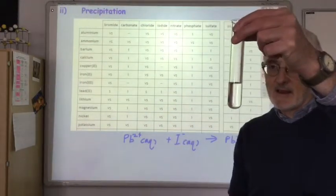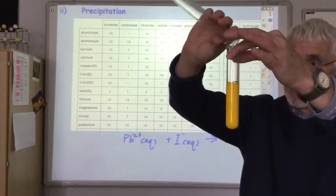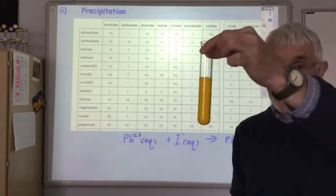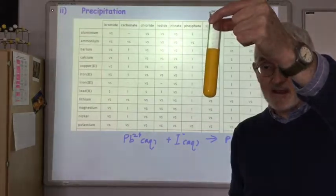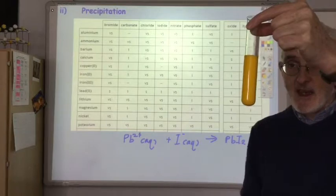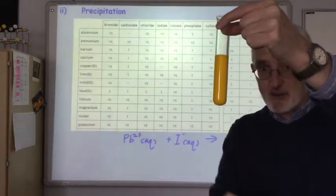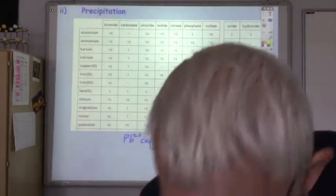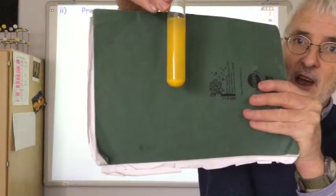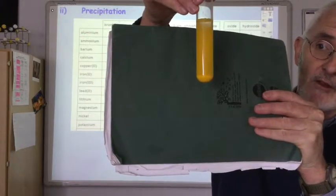Here are my lead ions and here are my iodide ions. A solid has been produced — that yellow solid is lead iodide, so I know the sample did contain lead ions. It might not be obvious at first that this is a solid, but if you leave it long enough it will settle out. Here's one I've left for a while and you can see the solid settling at the bottom of the boiling tube.